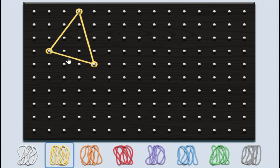I have joined three dots to get a triangle. How many vertices are there? One, two, three. How many sides are there? One, two, three. How many angles are there? One, two, three. There are three sides, three vertices and three angles for a triangle.